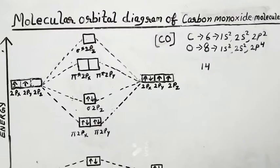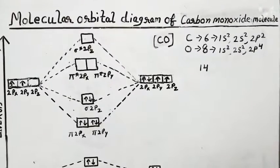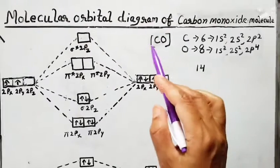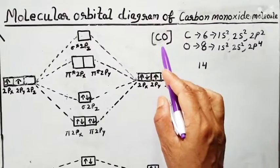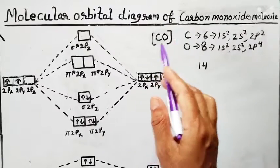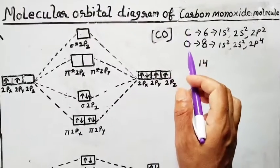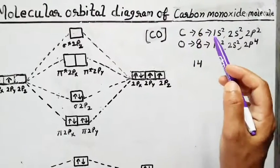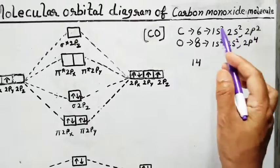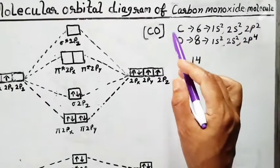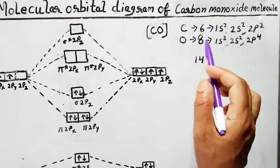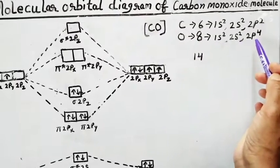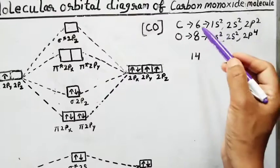Hello friends, today I am going to explain a new topic: the molecular orbital diagram of carbon monoxide molecule. The formula of carbon monoxide is CO, which is a heteroatomic molecule — one is carbon and another is oxygen. The atomic number of carbon is 6, so its electronic configuration is 1s2 2s2 2p2. The atomic number of oxygen is 8, so its electronic configuration is 1s2 2s2 2p4.